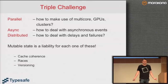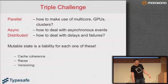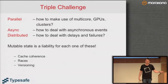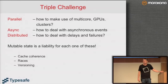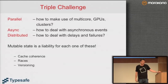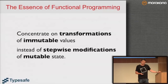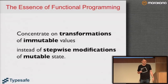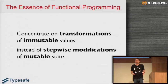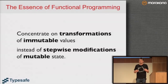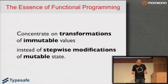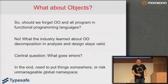Mutable state is actually a liability for each one of these challenges because it causes the tough problem of cache coherence — how do you invalidate caches if there's a change somewhere over the network, dealing with races, versioning, and so on. The essence of functional programming is that instead of doing step-wise modifications of mutable state, we want to concentrate on transformations of immutable values.